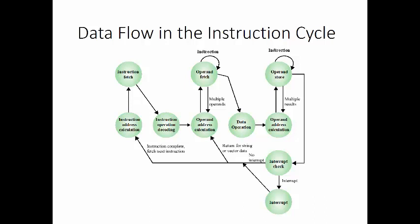Once the fetch cycle is over, the control unit examines the contents of the instruction register to determine if it contains an operand specifier using indirect addressing. If that's the case, we do an indirect cycle. The rightmost end bits of the memory buffer register, which contain the address reference, are transferred to the memory address register. Then the control unit requests a memory read to get the desired address of the operand into the memory buffer register.